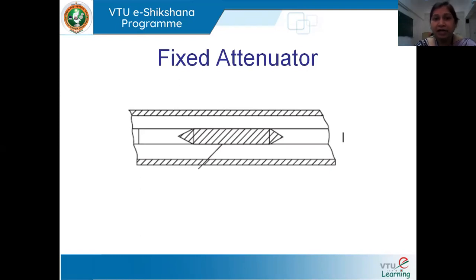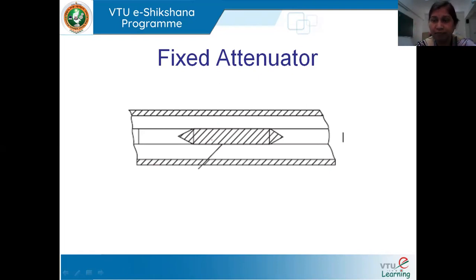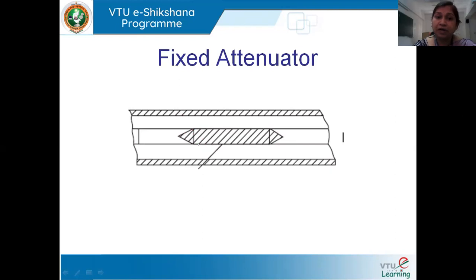In the fixed attenuator, as shown in the picture, we have opened the rectangular waveguide to show that in the middle section — where the main electric field exists — we place a dielectric coated with resistive material. This dielectric is tapered at both ends. We do this to avoid reflection: we only want to absorb the signal and not have any loss due to reflection. The tapered ends ensure impedance matching so there is no reflection.